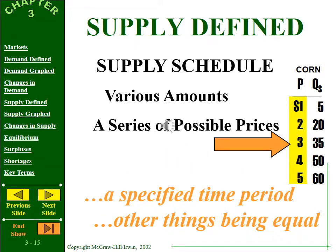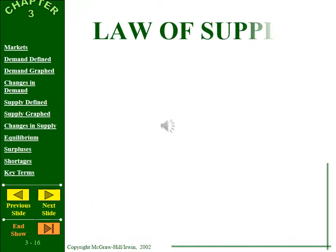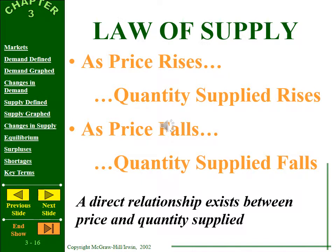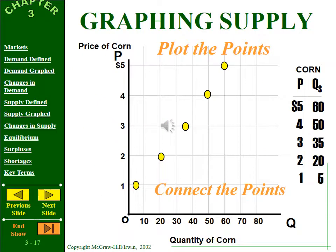Supply, as discussed, is upsloping. A direct relationship exists between price and quantity supplied — as price goes up, quantity supplied goes up, because producing becomes more profitable. This gives us the law of supply: as price rises, quantity supplied rises; as price falls, quantity supplied falls — producing an upward sloping supply curve that meets the downward sloping demand curve at equilibrium.